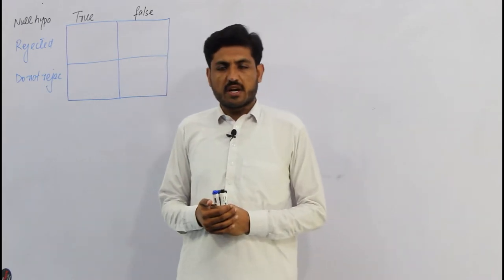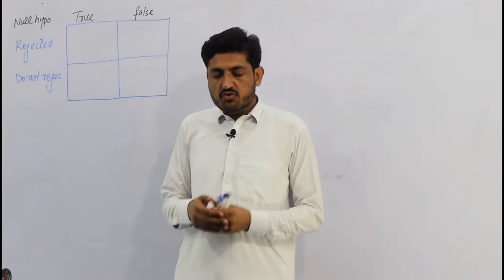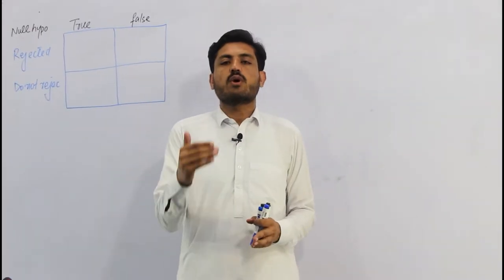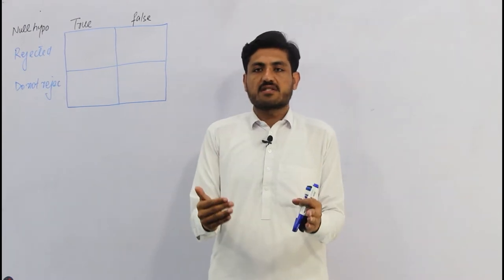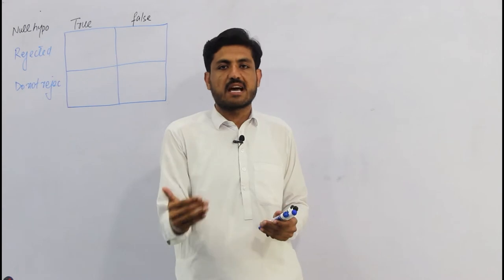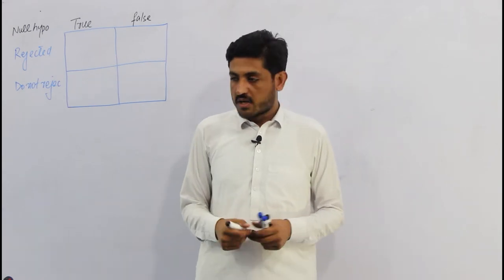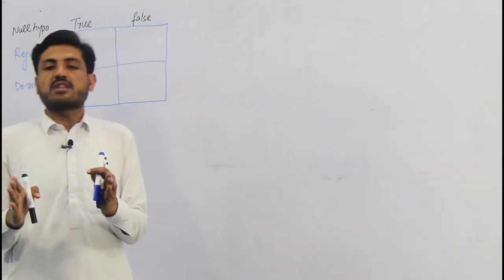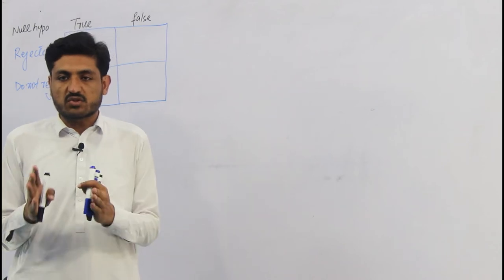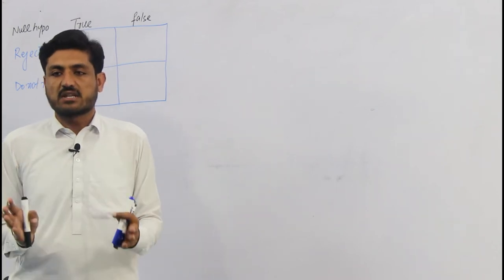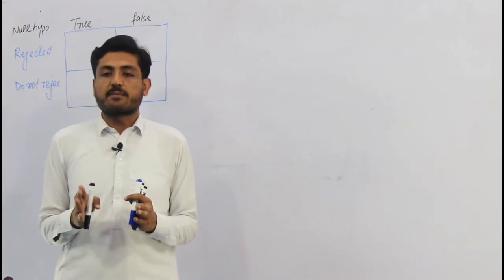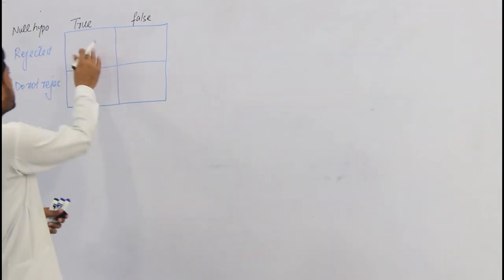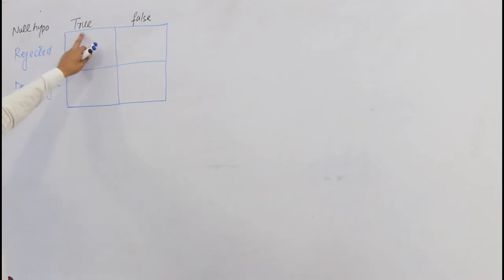To explain Type 1 and Type 2 errors: when the null hypothesis is true and we reject it, we are committing a Type 1 error. If the null hypothesis is false and we fail to reject it, we are committing a Type 2 error. These two conditions are mutually exclusive — if there is a Type 1 error, Type 2 error is not possible, and vice versa.